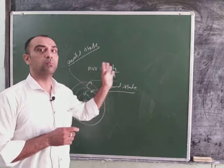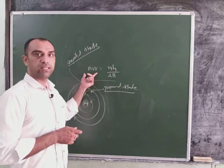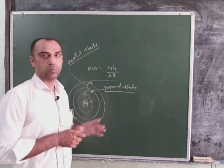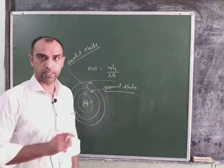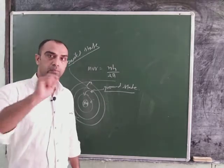In the same way, we say integral multiple of h upon 2 pi. This is the angular momentum. mvr is the angular momentum, which is the integral multiple of h upon 2 pi. This is the constant value given by Bohr in this section. Now, the second thing is that we can do angular momentum in mathematical forms.